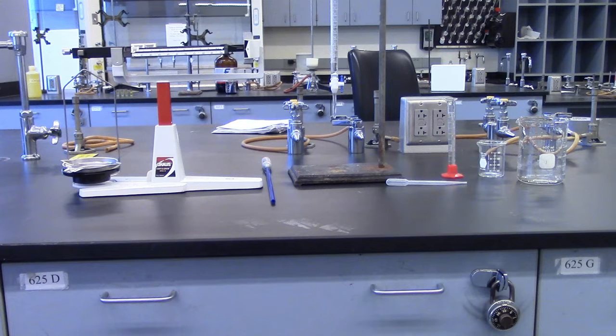For this experiment, you will need a balance and thermometer, a 50 milliliter burette, a 10 milliliter graduated cylinder, and beakers size 50 milliliters, 100 milliliters, and 600 milliliters. A plastic pipette will be helpful.